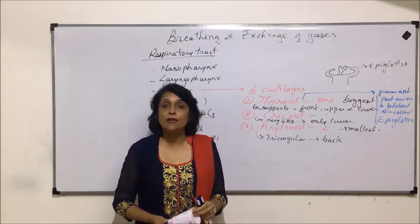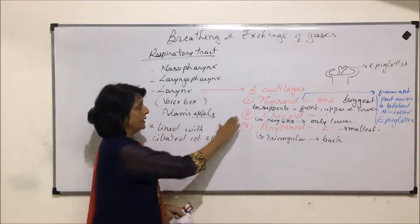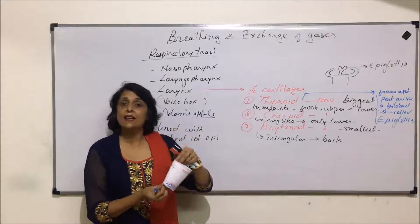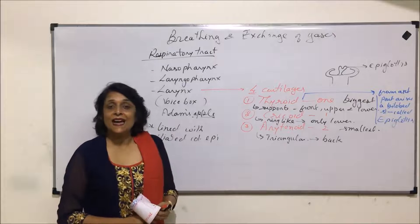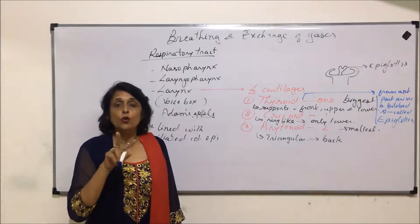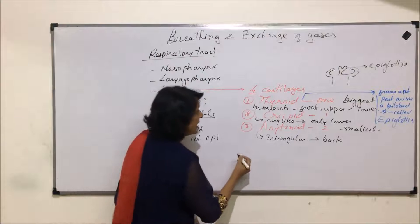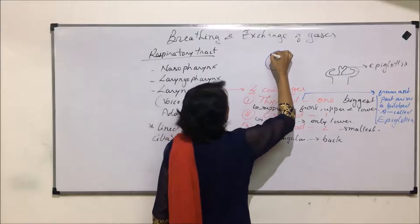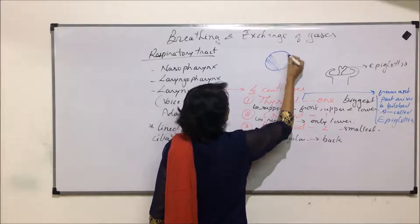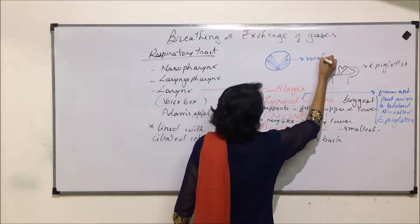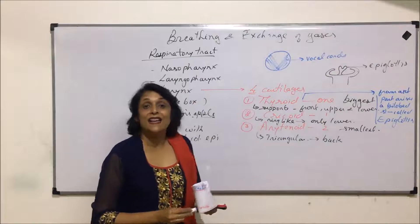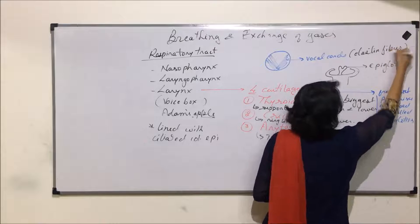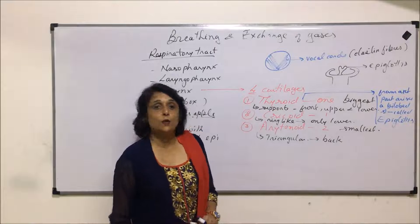The larynx is more developed in males compared to females. In total there are four cartilages: one thyroid, one cricoid, and two arytenoid cartilages. The larynx has two elastic flap-like structures inside. If we cut the larynx transversely, we see these two flap-like structures — these are the vocal cords. Vocal cords are made up of elastic fibers.